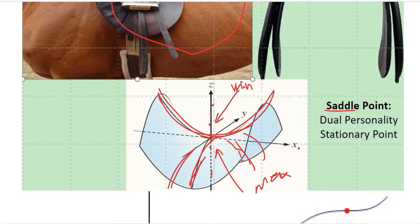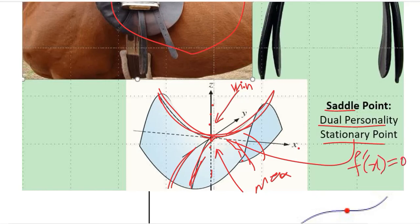This is called a dual personality stationary point. It is stationary because the slope is 0 at this point, and it has dual personality because it is both a maximum and a minimum at the same point.